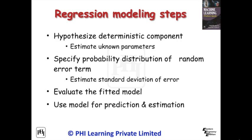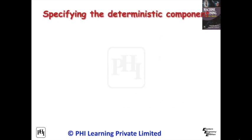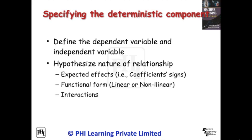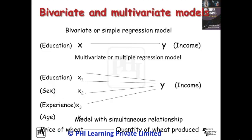By specifying the deterministic components, define the dependent variable and independent variable, and hypothesize the nature of the relationship. Bivariate analysis looks at two paired data sets, studying whether a relationship exists between them. Multivariate analysis uses two or more variables and analyzes which, if any, are correlated with a specific outcome. The goal in the latter case is to determine which variables influence or cause the outcome.